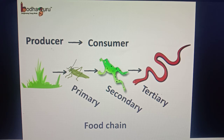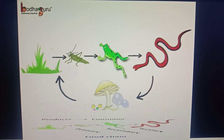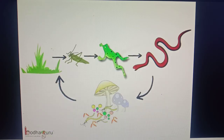The grasshopper is the food of the frog. In nature, there are many such food chains, and they may be interconnected too. After the death of the consumers or the producers, the decomposers like the bacteria etc. decompose their body and recycle the nutrients back to the nature.